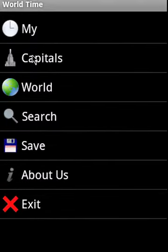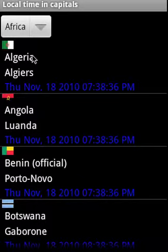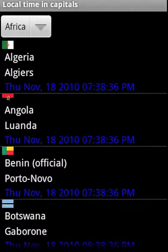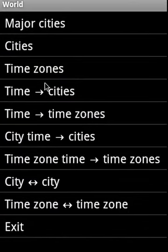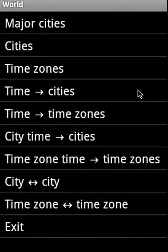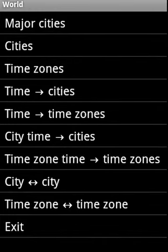Then Capitals — it gives us the local time in country capitals, and you can select by region or select all. World basically gives us local time in 50 major cities, local time in 500 plus cities, local time in 600 plus time zones, and allows you to convert a particular time to cities, to time zones, convert a city time to other cities, convert a time zone to other time zones, and convert between city to city and time zone to time zone.